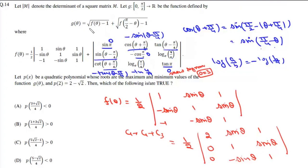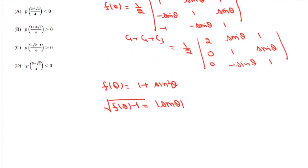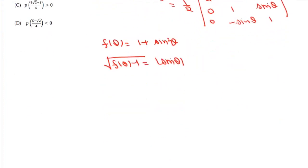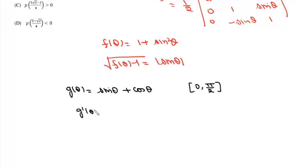Now, g(θ) = √(f(θ) − 1) + √(f(π/2 − θ) − 1), and θ lies in the first quadrant. In the first quadrant, |sin θ| = sin θ. Also, sin(90° − θ) = cos θ, so we can write g(θ) = sin θ + cos θ.